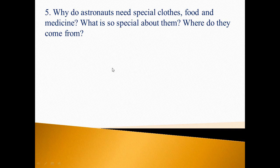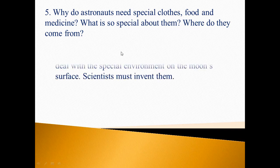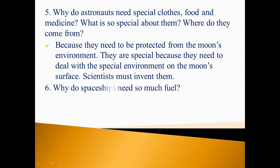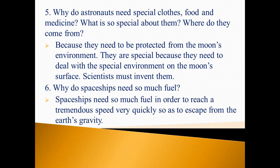Number four: what is the environment on the moon's surface like? There is no air on the moon's surface and the pressure is very low. As a result, the temperature rises to over 100 degrees Celsius in full sunlight — it is impossible to live on the moon. Number five: why do astronauts need special clothes, food, and medicine? Because they need to be protected from the moon's environment; scientists must invent them. Number six: why do spaceships need so much fuel? In order to reach tremendous speed very quickly so as to escape from the Earth's gravity.